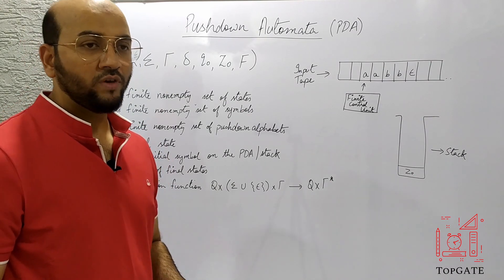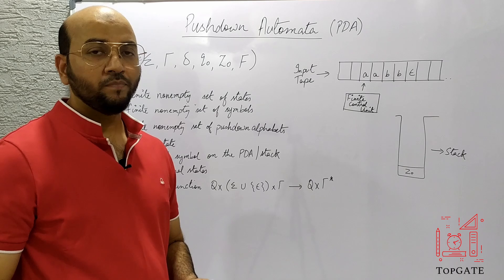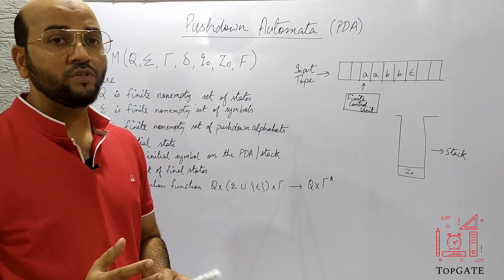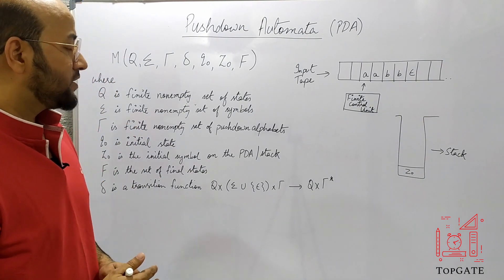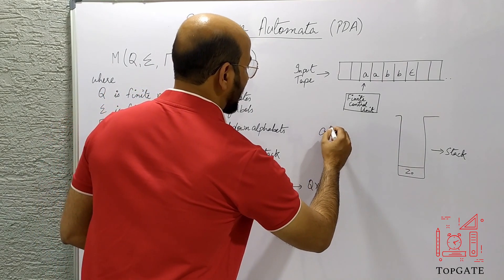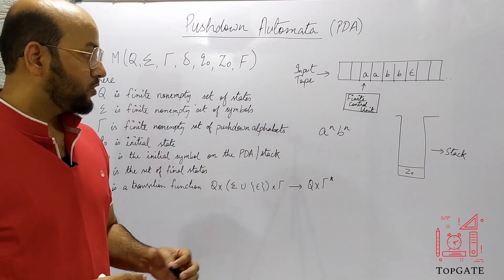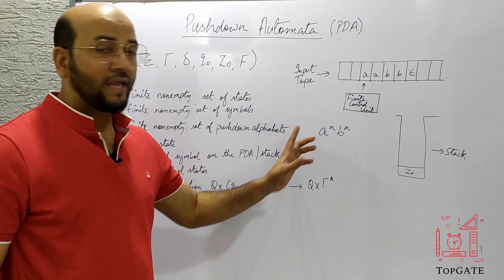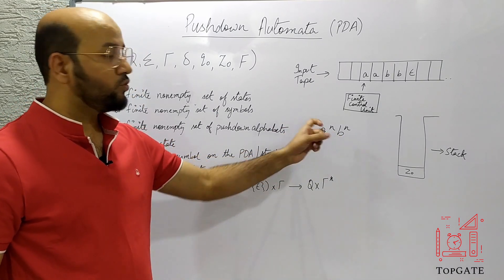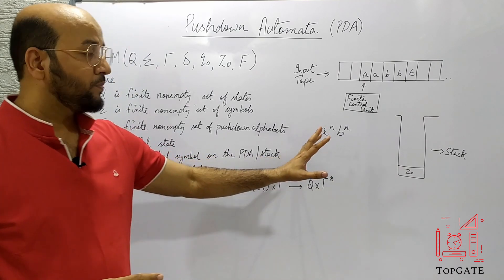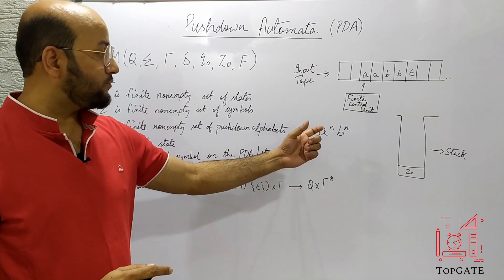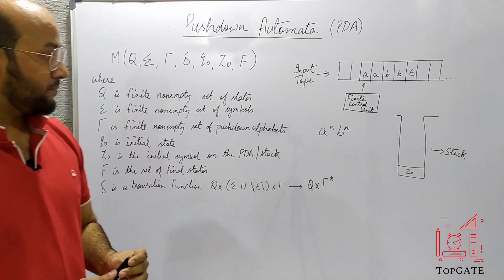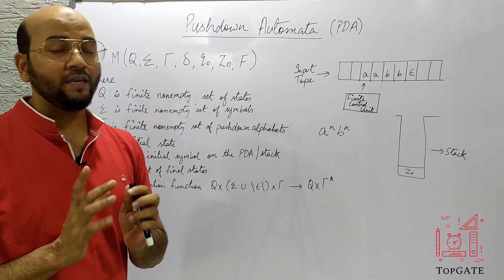If we go back to our previous lectures where we studied finite automata, we see that finite automata has a very serious limitation: it was not able to remember things. It was not able to accept a language in which some comparison needs to be done. For example, if I ask you to make an NFA or DFA for the language A to the power N, B to the power N, you probably won't be able to, because we have to remember the number of A's to ensure that the number of B's equals the number of A's. Finite automata was not able to do this because it had no memory.